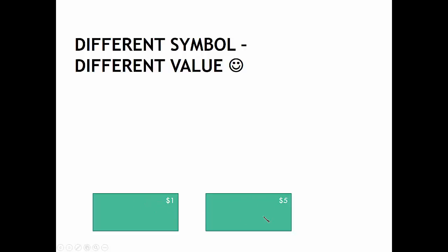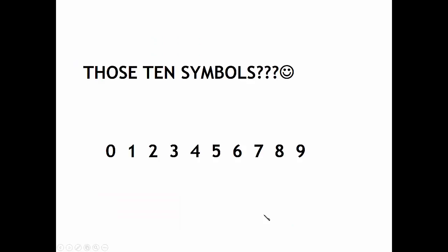Changing the symbol changes the value. Those ten symbols—zero, one, two, three, four, five, six, seven, eight, nine—they're called digits. Three and four are digits. If they're by themselves, they can be numbers too.